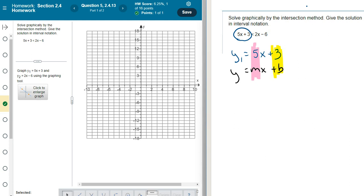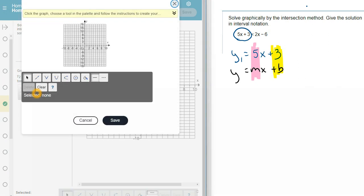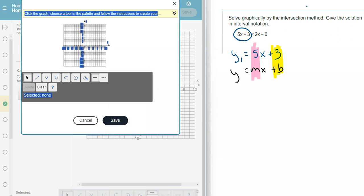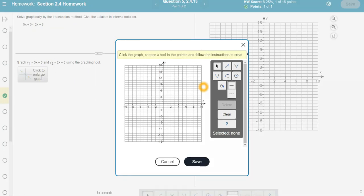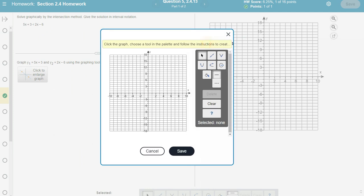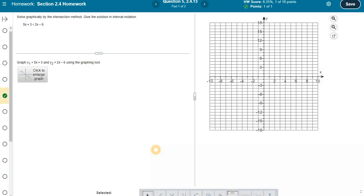So I'm going to come over to the graph, and I'm going to click to enlarge the graph. Let me go a little bigger screen on this. Let me cancel that and hit it one more time. I'm going to click to enlarge it.